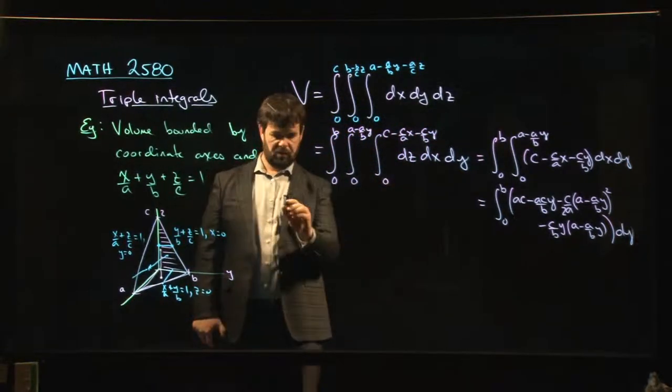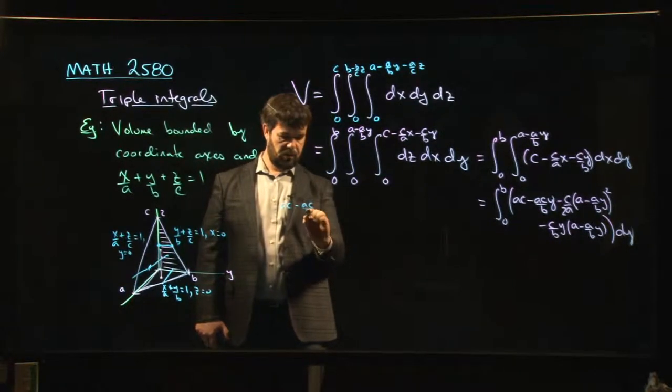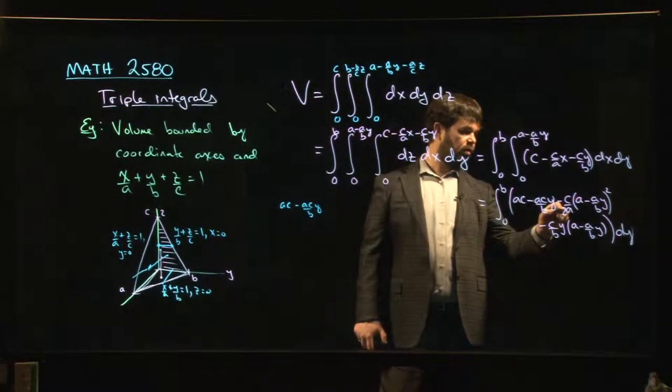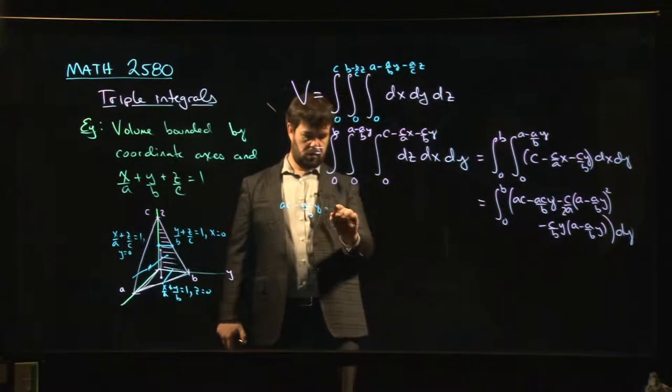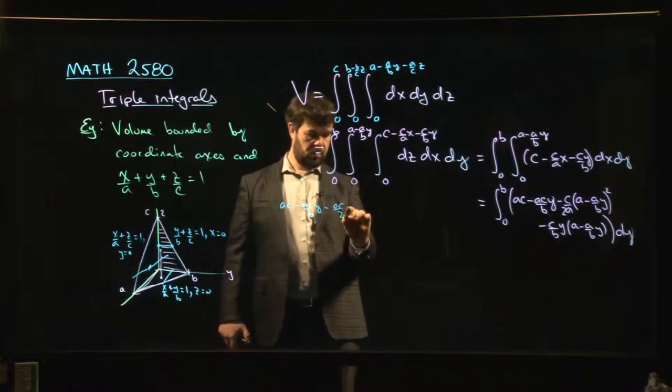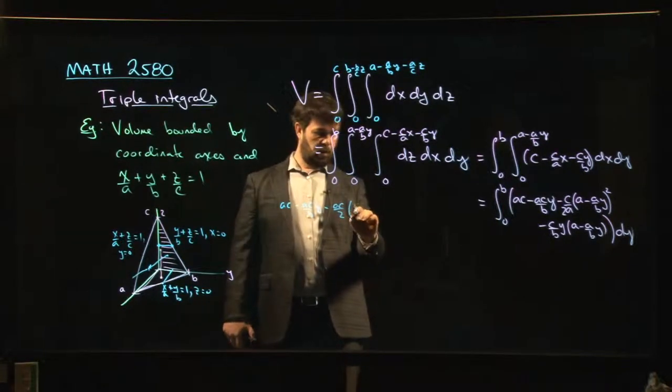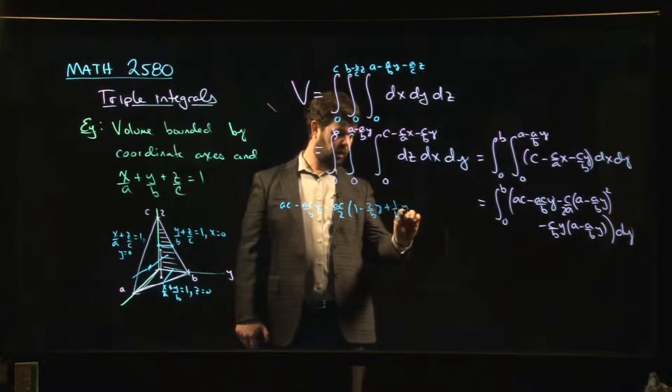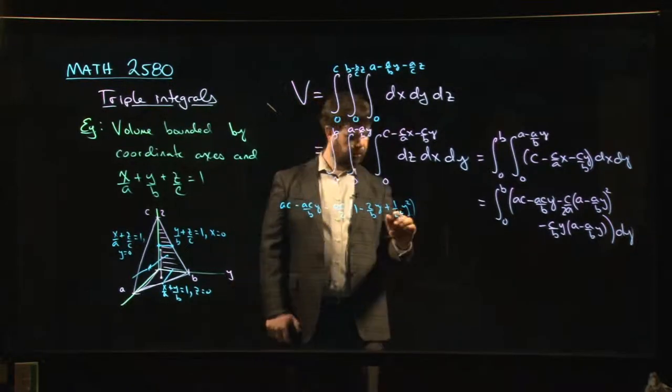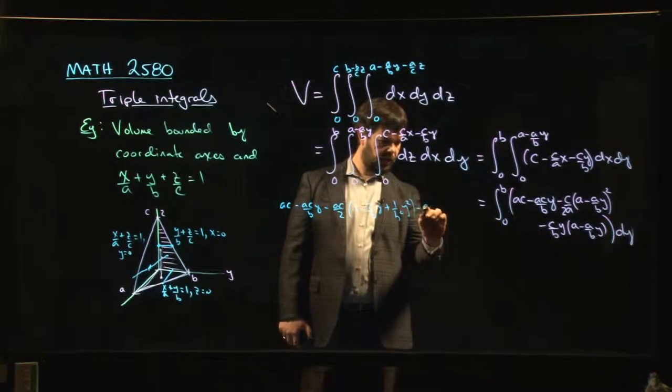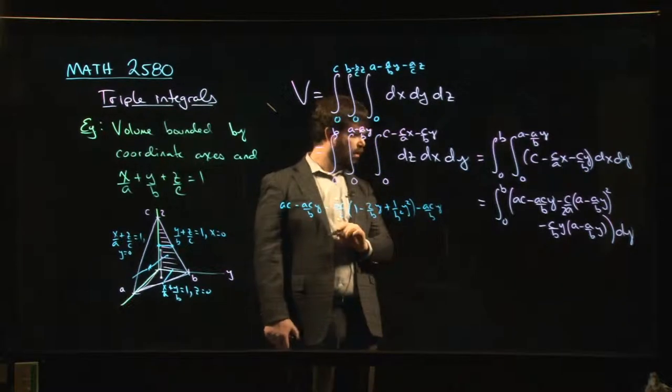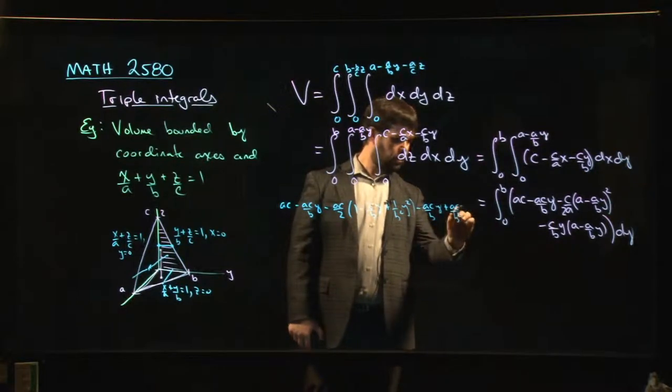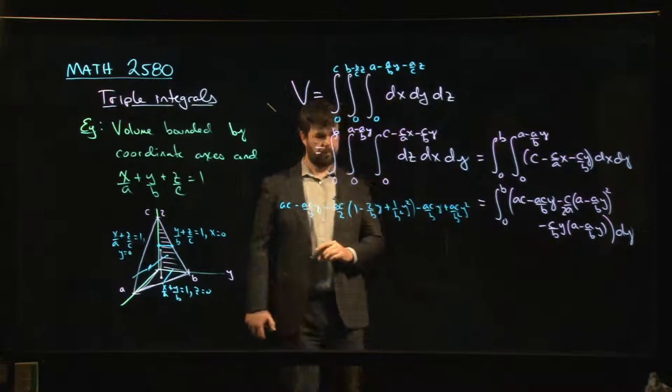So what do we have if I kind of, let's see. So we've got ac. We've got -(ac/b)y. We've got, so there's going to be an a² in there. It cancels with that a, so there's going to be an ac, (ac/2)[1 - (2/b)y + (1/b²)y²]. Then I've got -(ac/b)y. I know there's two of those. And then I've got +(ac/b²)y².